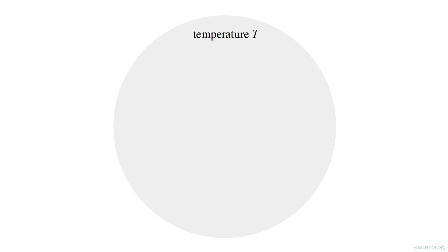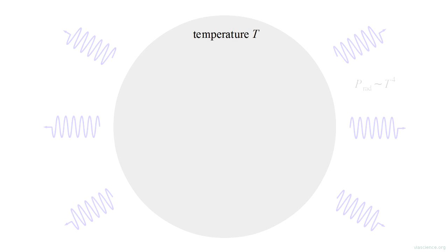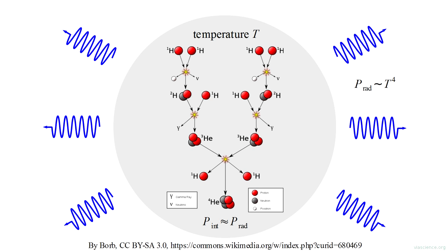Both of these sources of pressure vary with temperature. At non-zero temperature, a star will radiate power into space. This must be made up by an internal power source, otherwise the star will cool.